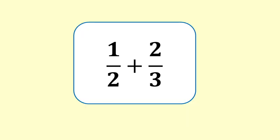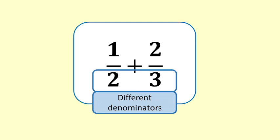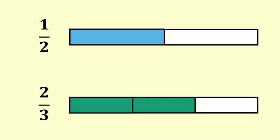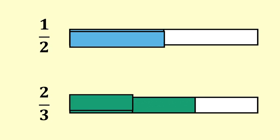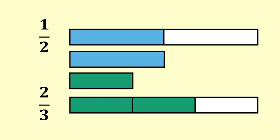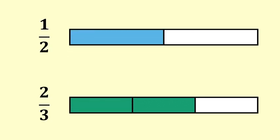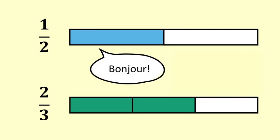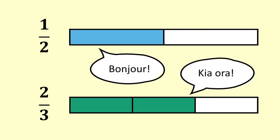One half plus two thirds. One half and two thirds have different denominators — you can see that the units are different sizes. It's like the half speaks French and the two thirds speaks Māori. They cannot talk to each other in their own languages; they need to find a common language to talk to each other.